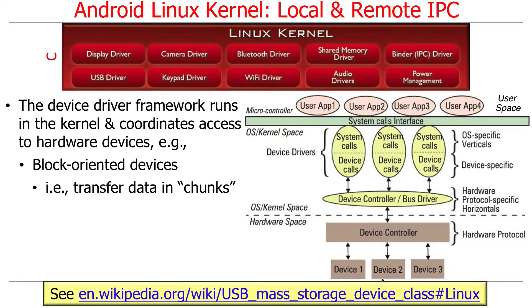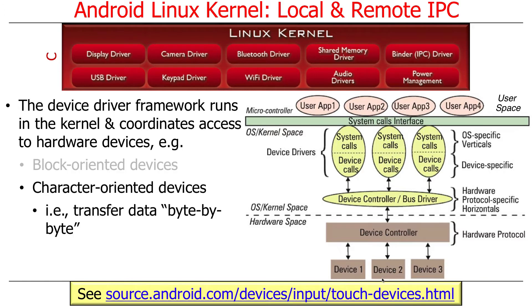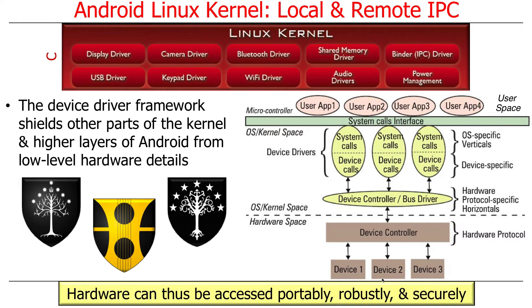There are two different kinds of things in the device framework. There are block-oriented devices that transfer data in chunks — a good example would be reading and writing files, where you can address them as a chunk, saying 'give me the next 4K.' And then there are character-oriented devices, which transmit data byte-by-byte. Typically things that interact with the user, like serial lines, are byte-by-byte transfers. The whole purpose of this is to shield everybody else from these low-level details.